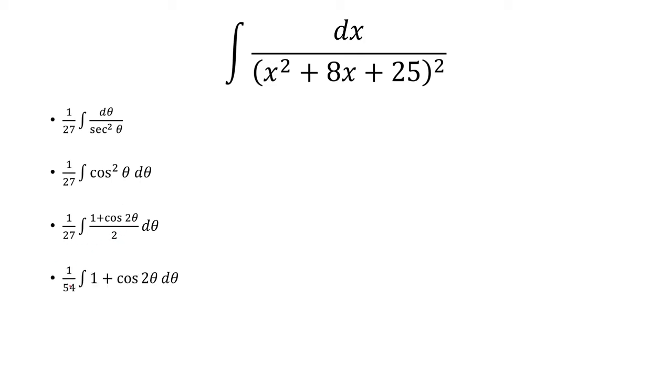I'm going to pull out the 2 in the denominator. So it's going to be 1 over 54. Find the antiderivative now. So theta plus sine 2 theta over 2 plus a constant.